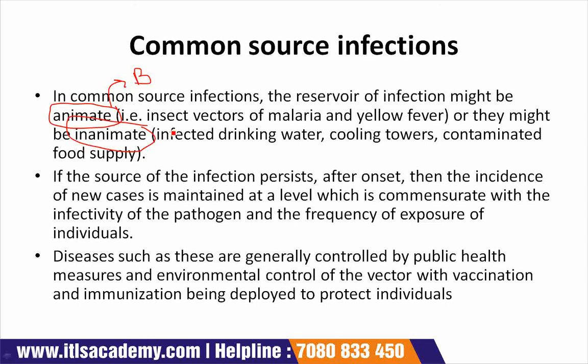In the simplest cases, the source of infection is transient — for example, food sourced to a single retail outlet or an isolated event such as a wedding reception. In such instances, the onset of new cases is very rapid, phased over one to one-and-a-half incubation periods, and the decline in new cases closely follows the elimination of the source.